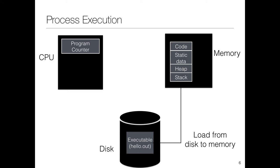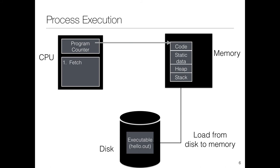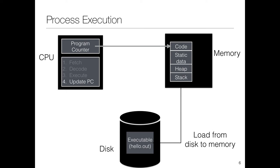Then we have the CPU, which is our main processing engine. It has a special register called the program counter. The program counter stores the address of the current instruction. Let's say the program counter points to the first instruction of the code. We have a fetch cycle which reads the address corresponding to the program counter, a decode cycle which decodes it, and we finally execute the instruction and update the program counter to the next instruction. This is in one sense the entire life cycle of a process.